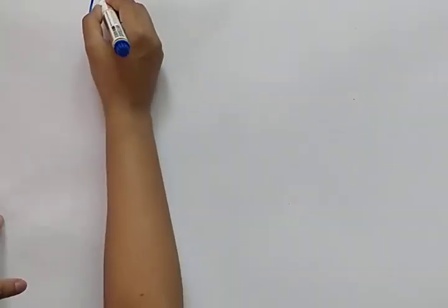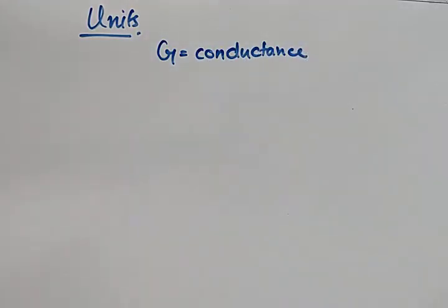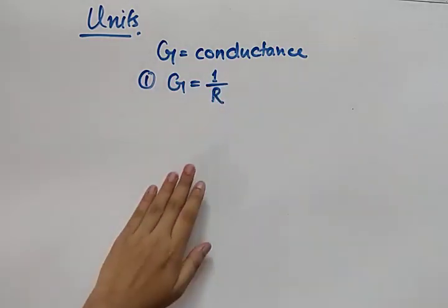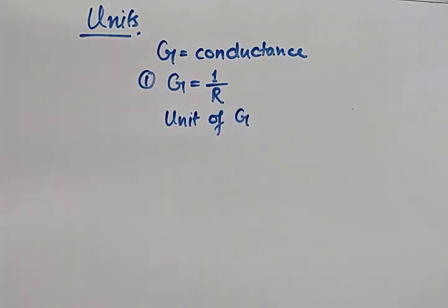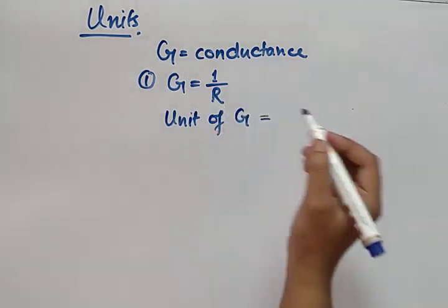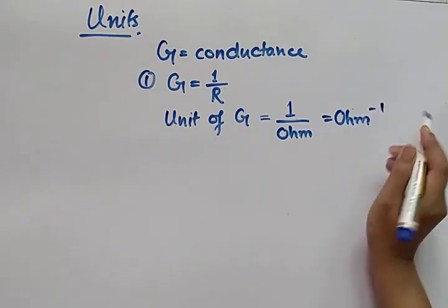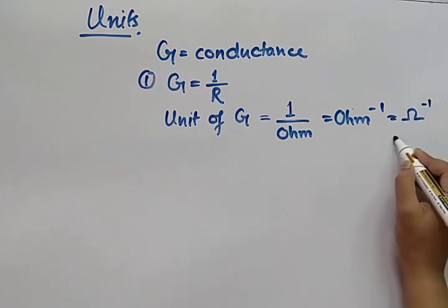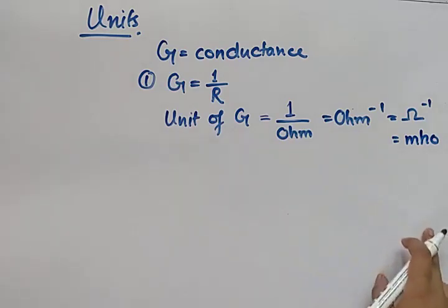Let's start with the conductance chapter. The first thing we are going to discuss is conductance. Symbol: G. G is equal to one by R — the reciprocal of resistance is conductance. Now, the unit of G: the unit of R is ohm, so the unit of G is ohm inverse.